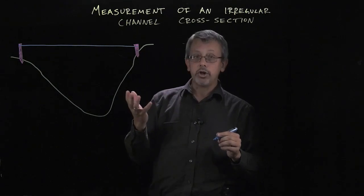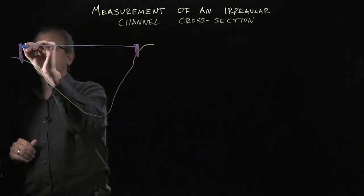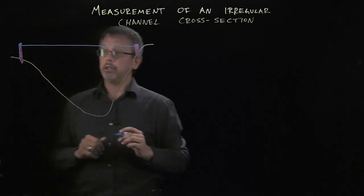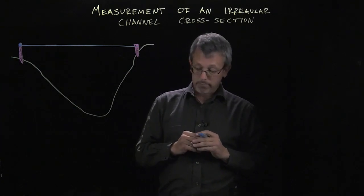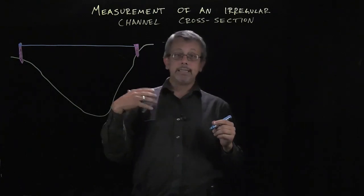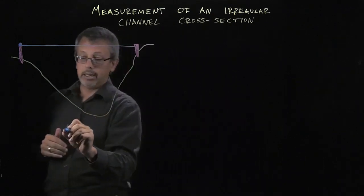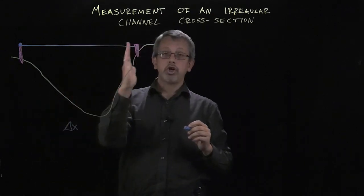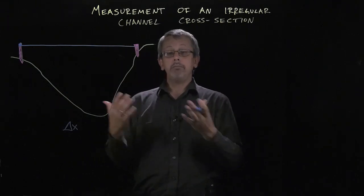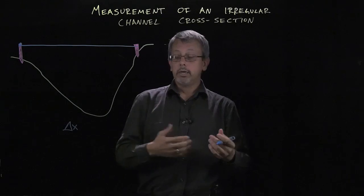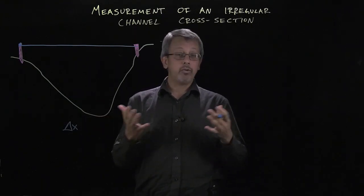I'm also going to need to select an origin, some measurement point along the horizontal axis. I'm going to choose this stake over here on the left-hand side as being my origin point. Now I'm going to need to select an increment, a delta x, an increment of which I'm going to chop up the channel. Depending on how much work I want to do, more accuracy equals more work, which will determine how many pieces I want to chop it up into, usually somewhere between 10 and 20.